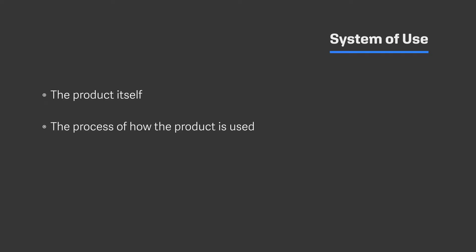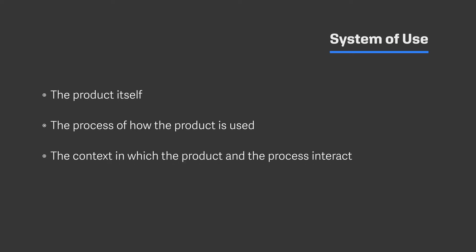A system of use encompasses three components. Number one, the product itself. Number two, the process by how the product is used. And number three, the context in which the product and the process interact.